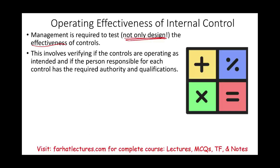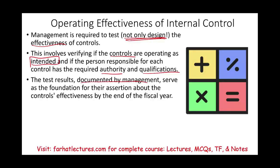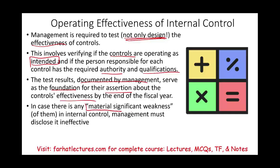Testing involves verifying that controls are operating as designed and as intended, and that the person responsible for each control has the required authority and qualifications. The results should be documented by management and should serve as the foundation for the assertion about control effectiveness. We collect evidence and at the end conclude whether the control is effective or ineffective. If there is any material significant weakness, we'll define this in detail later.